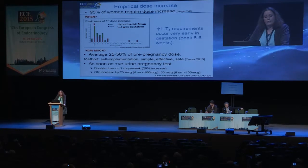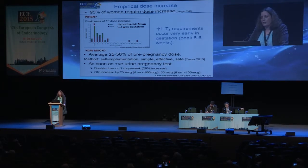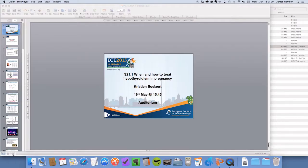How much do we increase by? Studies agree that women generally need about a 25 to 50% increase in pre-pregnancy dose. We adopt a pragmatic approach that uses self-implementation — we tell women to double their dose on two days of the week as soon as they have a positive urine pregnancy test, giving an approximate 29% increase in levothyroxine regardless of the starting dose.